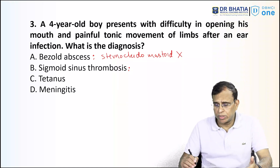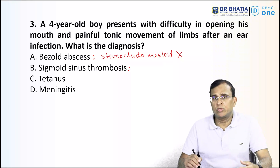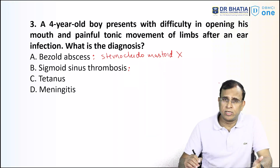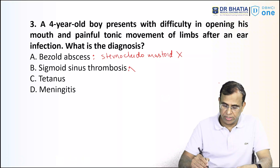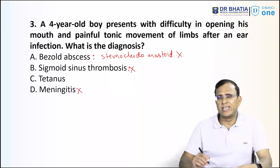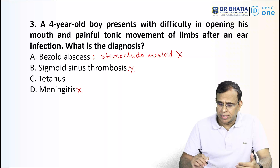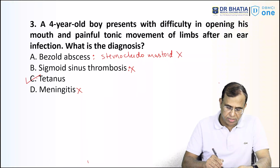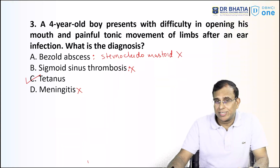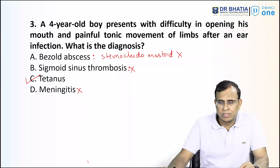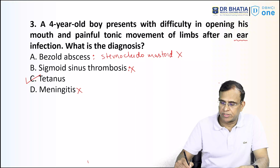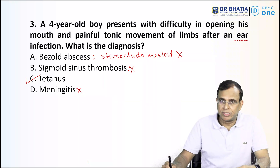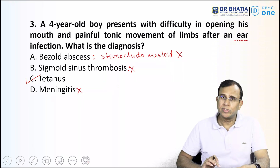Sigmoid sinus thrombosis has nothing to do with limbs and opening of the mouth — the patient typically has fever, headache, and signs like Griesinger's sign, delta sign, Crowe-Beck sign, Tobey-Ayer sign, none of which are given here. Meningitis also has fever, headache, raised intracranial pressure — none of which are described. In tetanus, there is very typically spasm of the muscles, so this kind of presentation — lockjaw and tonic limb movements — can happen in tetanus. Tetanus is the correct answer. The ear infection was a trap; any infection in any part of the body can trigger tetanus.